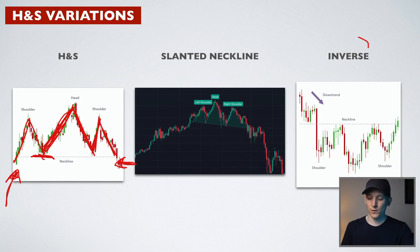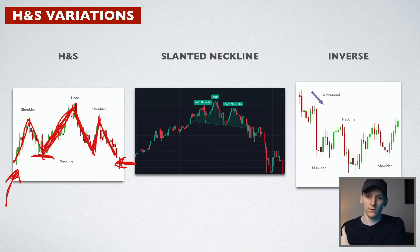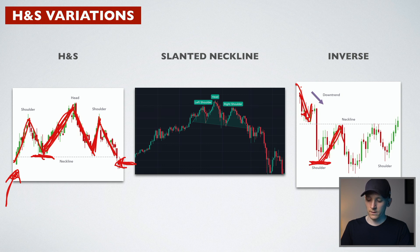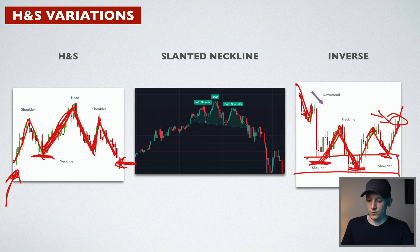Head and shoulders also plays out in reverse as an inverse head and shoulders — a bullish pattern. In a downtrend, you look for a shoulder to the downside, then the neckline, then the deeper head, then the second shoulder, and trade a breakout to the upside. This is also essentially a triple bottom — the exact opposite of the head and shoulders pattern.